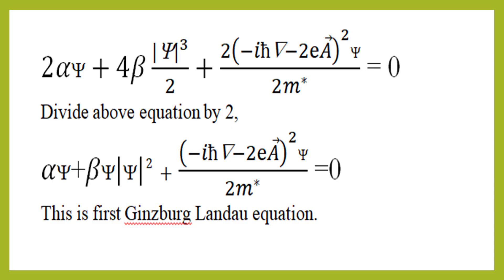After dividing this equation by two, we can get the first Ginzburg-Landau equation. The first Ginzburg-Landau equation depends on Chi, A, and some constants.